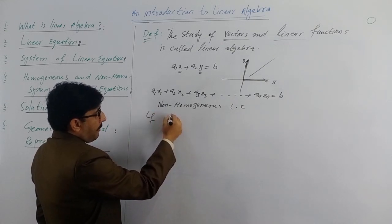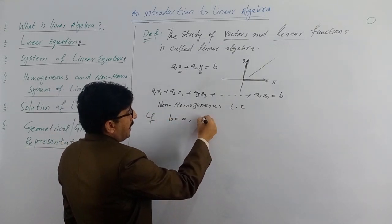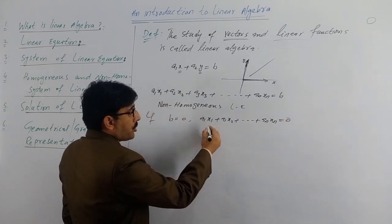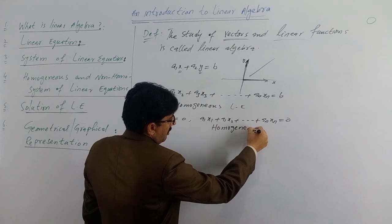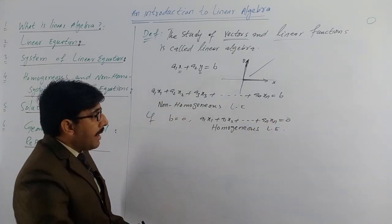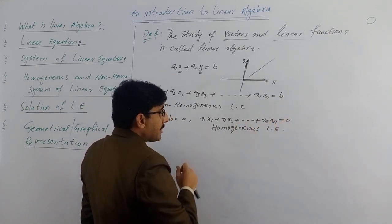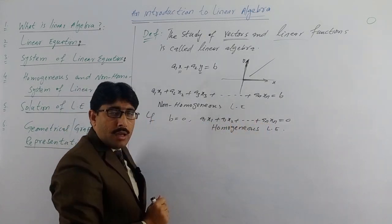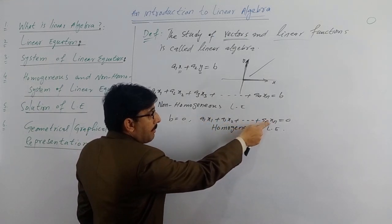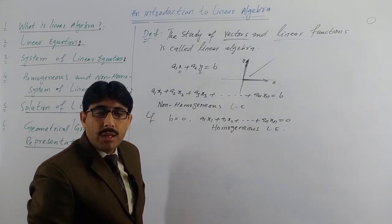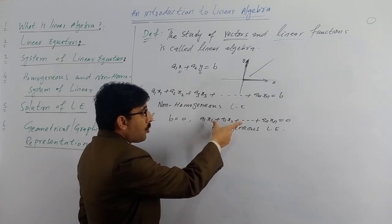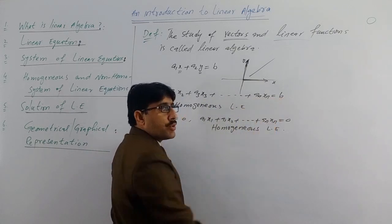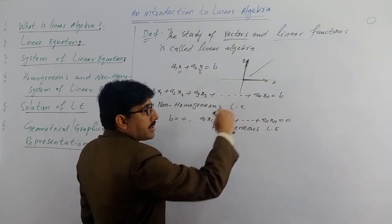اگر اس میں b کو ہم zero کر دیں تو پھر equation بنے گا: a1x1 + a2x2 + ... + anxn = 0، اور اس equation کو ہم پھر کہیں گے homogeneous linear equation۔ Homogeneous اور non-homogeneous کا basic definition یہ ہے کہ ہر term کی degree equal ہو۔ یہاں پر variables کا power one ہے، تمام terms کی degree same ہے، اس لئے یہ homogeneous equation ہے۔ لیکن جب constant b ہو تو اس کی degree zero ہوتی ہے، اس لئے تمام terms کی degree same نہیں ہے، اس لئے وہ non-homogeneous equation ہے۔